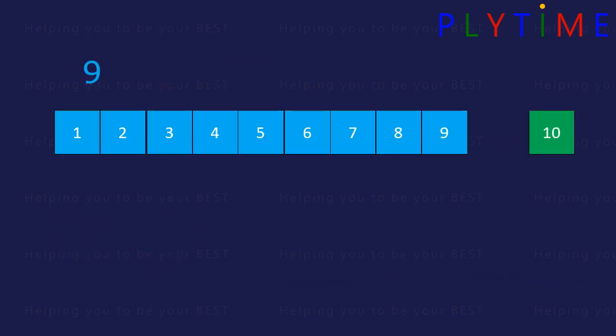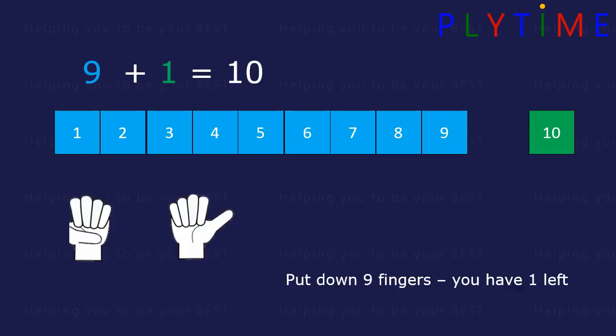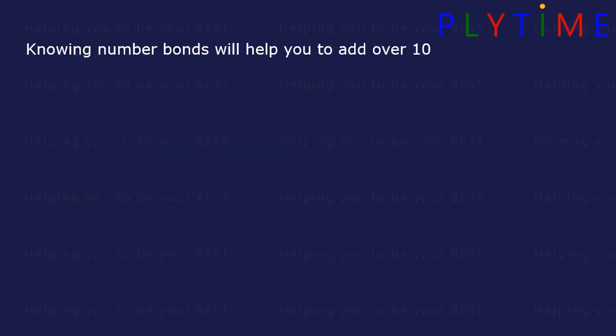9 and 1 is 10. Knowing number bonds will help you add over 10.